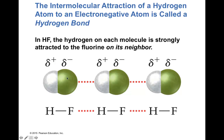In HF, the fluorine has lone pairs that attract the hydrogen of a neighboring HF molecule, creating a hydrogen bond. This interaction is not limited to identical molecules — for example, the fluorine in HF can attract the hydrogen from a water molecule. Each fluorine has three lone pairs, one of which interacts with the hydrogen of another HF molecule.